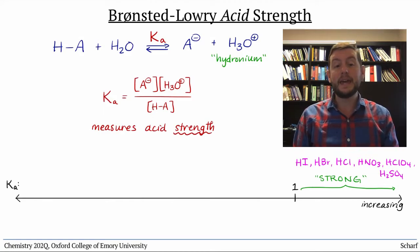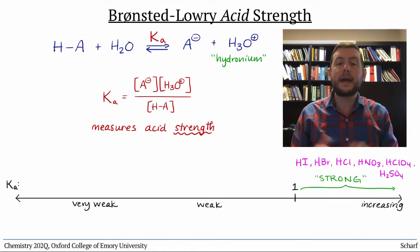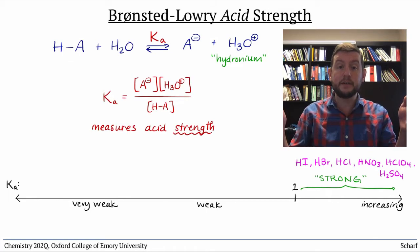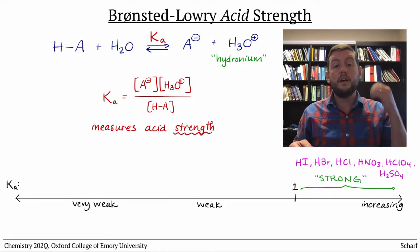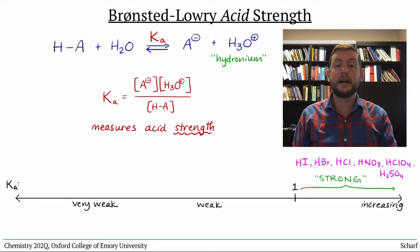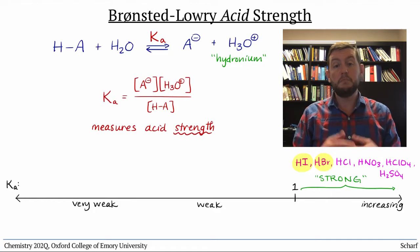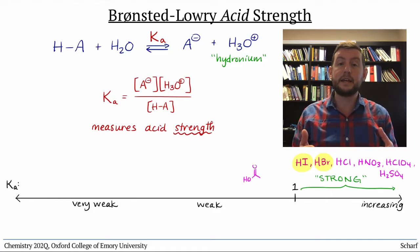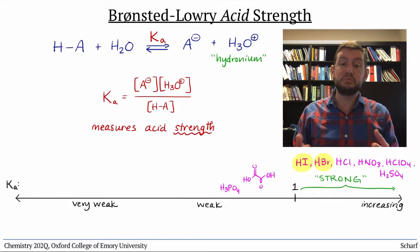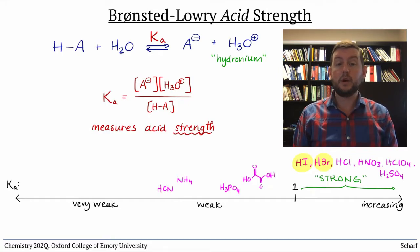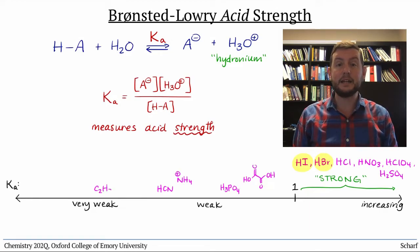Acids that have Ka less than 1 are called weak or very weak acids. Since equilibrium constants can have a continuum of values, acid strength is also a continuum, ranging from very strong acids like hydroiodic and hydrobromic acids, to moderately strong acids like oxalic or phosphoric acids, to pretty weak acids like hydrocyanic acid or ammonium, to very weak acids like acetylene or ammonia.